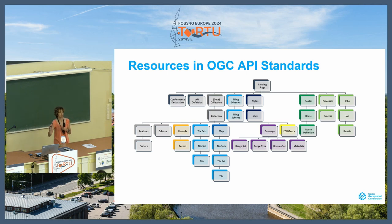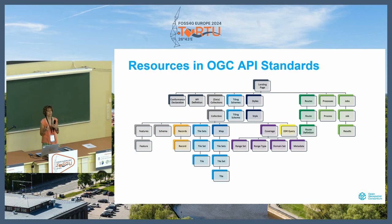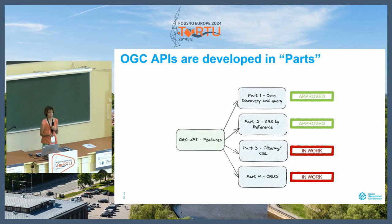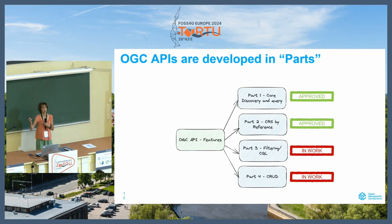If you look at projects that do implementations, you will see the organization of the code — there's a lot of reuse. At the same time, if you are developing clients, there's also some predictability of the paths, so you know what to expect when you start developing for a new API and you can reuse some code as well. This is something new in comparison to the previous generation of OGC standards, and I think it's something very valuable.